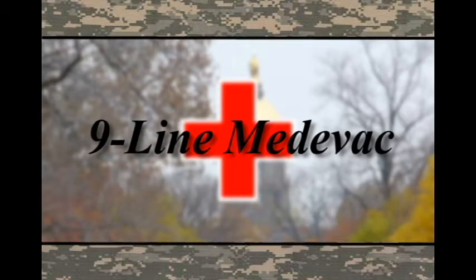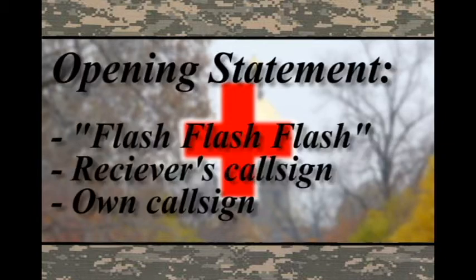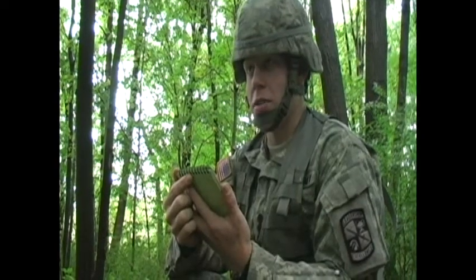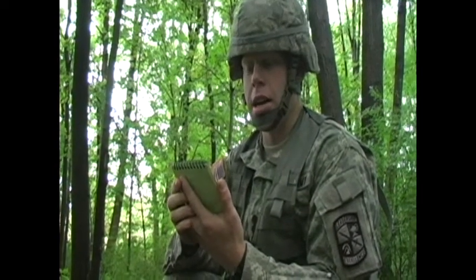After the casualty has been fully evaluated, the aid and litter team should complete a nine-line medevac report — the standard request for evacuating a casualty, including all information a medevac requires to effectively treat casualties. When sending up a nine-line medevac, the order should always be preceded by an opening statement: the reporting cadet calls 'Flash, flash, flash,' identifies the receiver's call sign and his own call sign, and informs the receiver that a nine-line will follow. For example: 'Flash, flash, flash. Tango 1-6, this is Charlie Tree 1. Nine-line to follow. Over.'